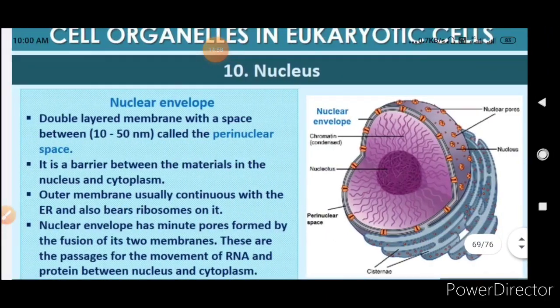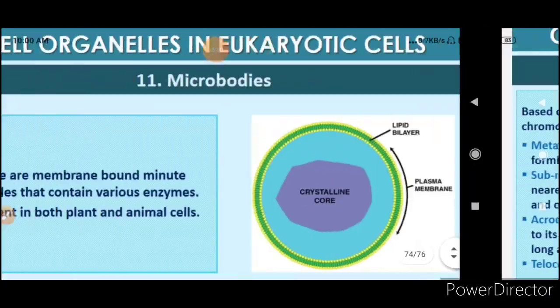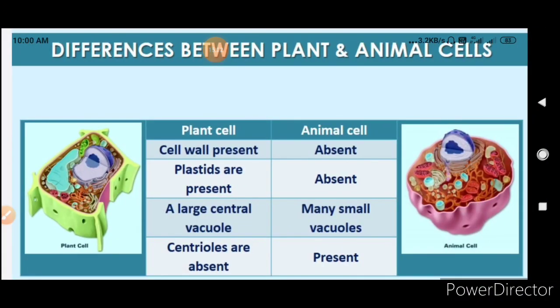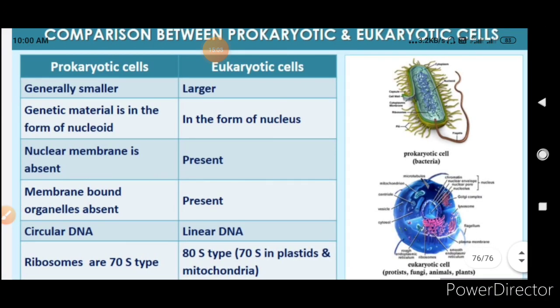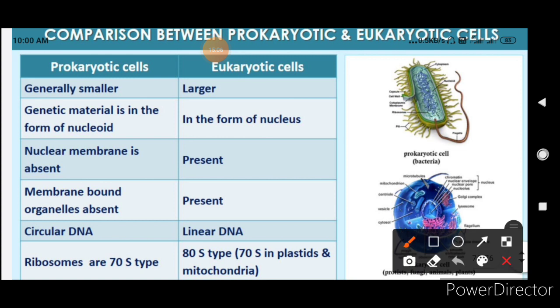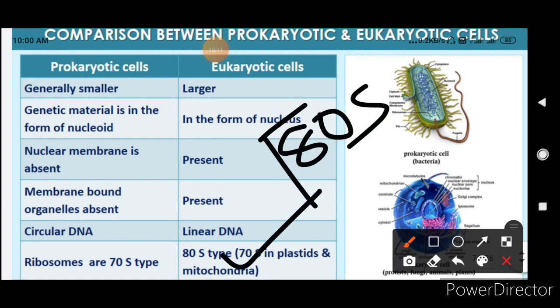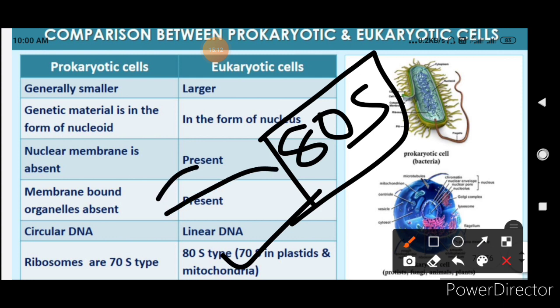To summarize: eukaryotic cells have 80S ribosomes, but plastids and mitochondria — which have their own genetic material — have 70S ribosomes, which are prokaryotic-type ribosomes. This is because these organelles are capable of synthesizing their own proteins to some extent.